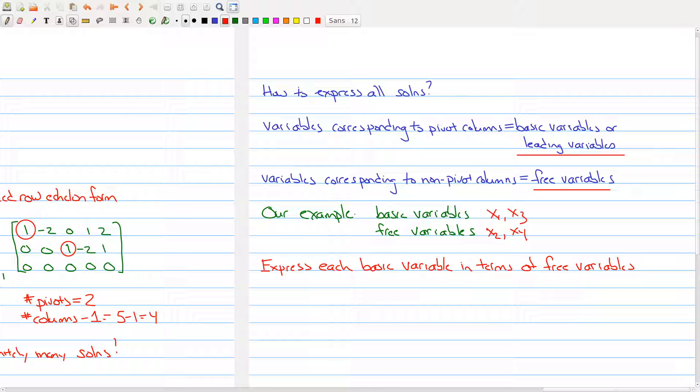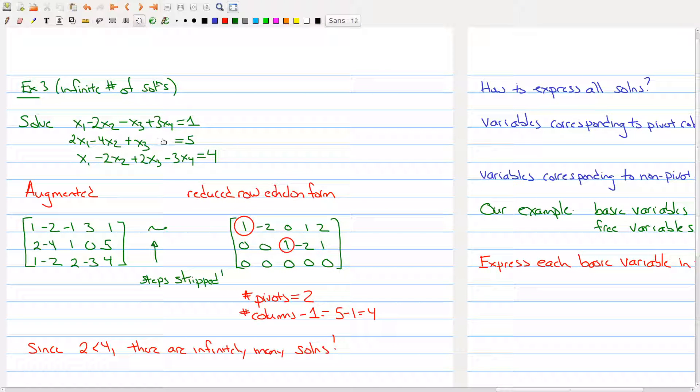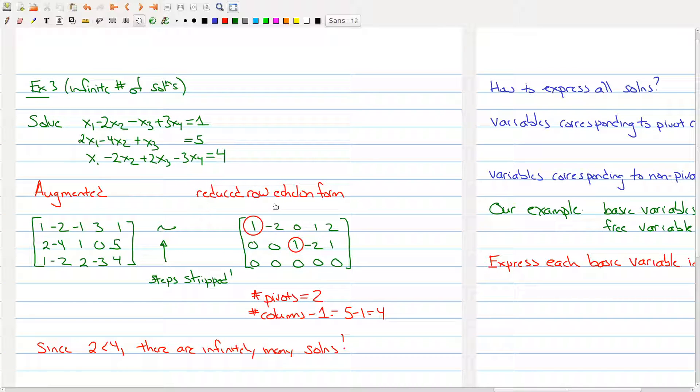Now, once you've characterized the type of variables that show up, what you can do is you can describe each basic variable in terms of free variables. So how do you do this? Well, you take your system of equations. Here, I'll just move this over here so that you can see. We have our system of equations over here. You have your augmented matrix. And what you want to do is you want to put it in reduced row echelon form, like what we have right here.